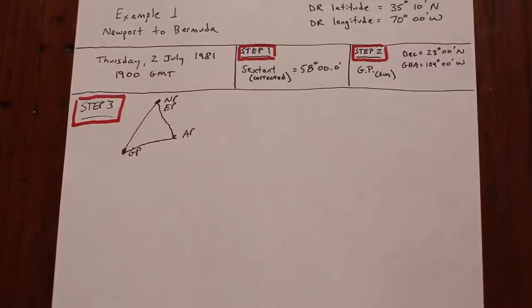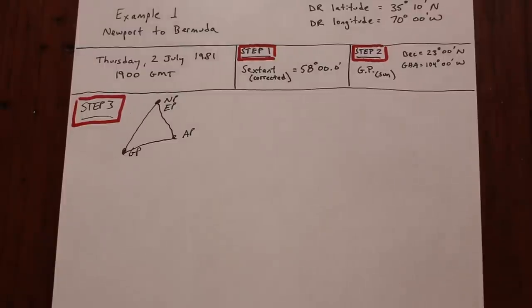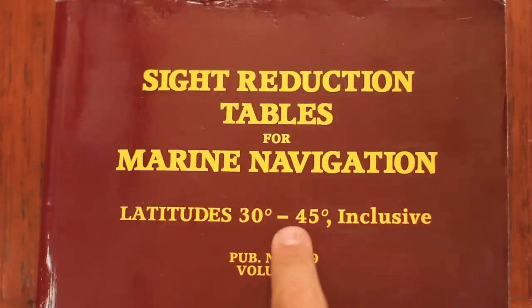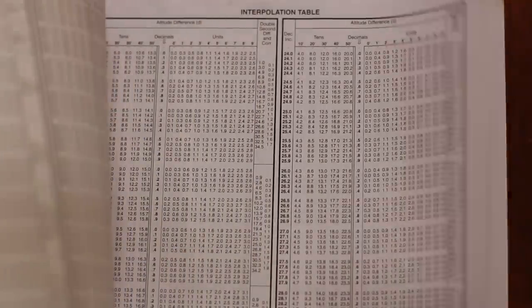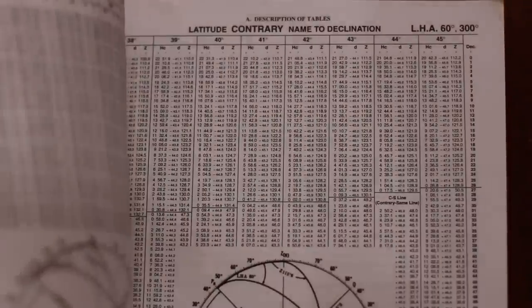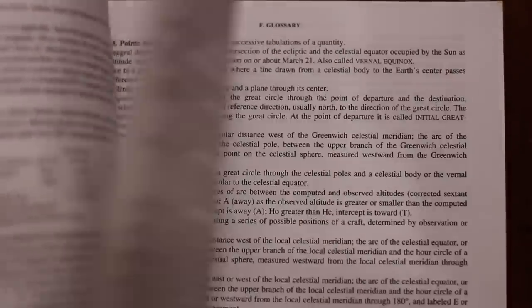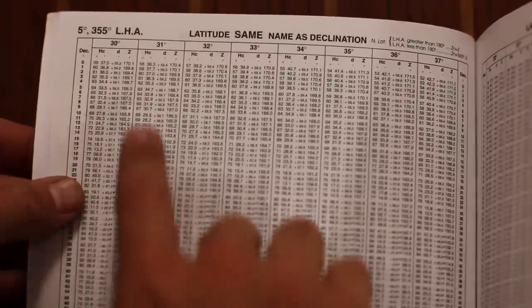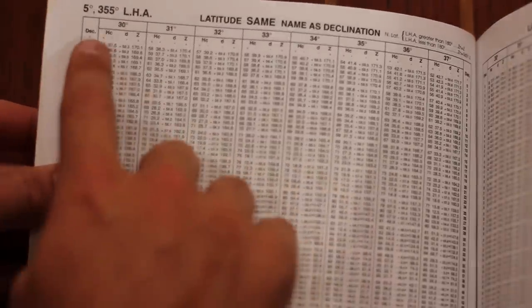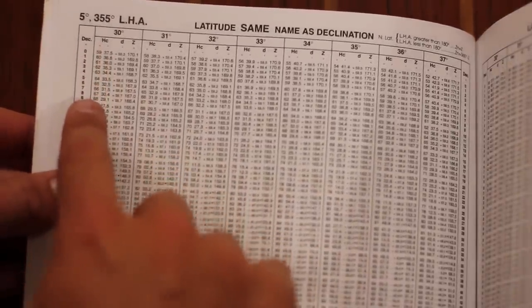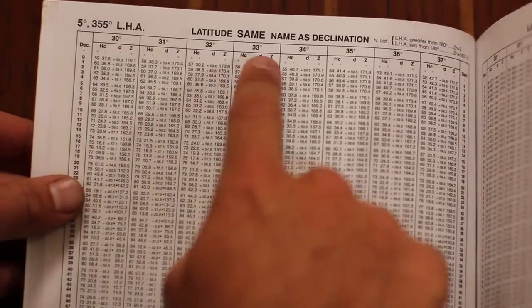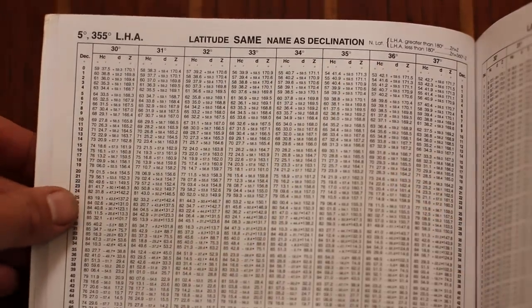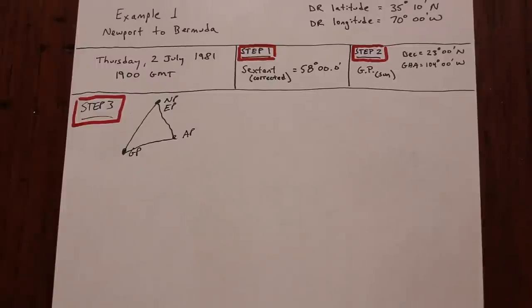We'll use the North Pole as our EP. I find it particularly useful to draw these type of diagrams each time I do a sighting, but it's actually not necessary. Since we'll be using HO229 to solve the problem, let's take a look at the pub so we know what questions to ask. It comes in four volumes depending on your latitude. But the guts of the book are tables of numbers. You'll quickly notice that there are three inputs: LHA, declination, and latitude.